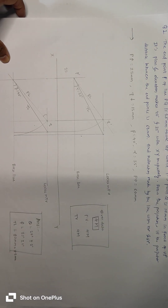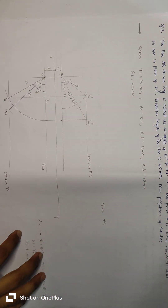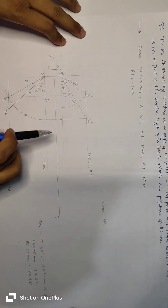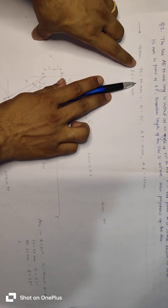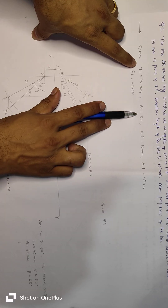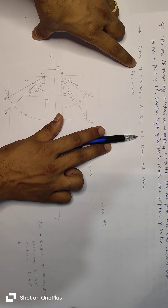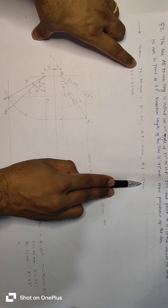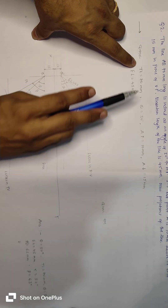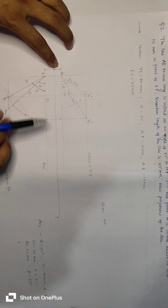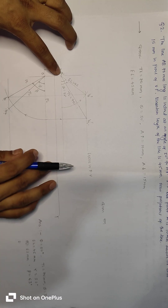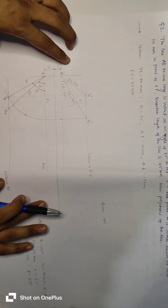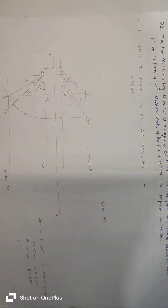The next question is question two. In this question, true length is given, theta 30 degrees is given, point A is above HP by 10 mm and in front of VP by 15 mm is given, and elevation length 45 mm is given. For given data: 4 marks; for complete front view: 4 marks; and complete top view: 4 marks.